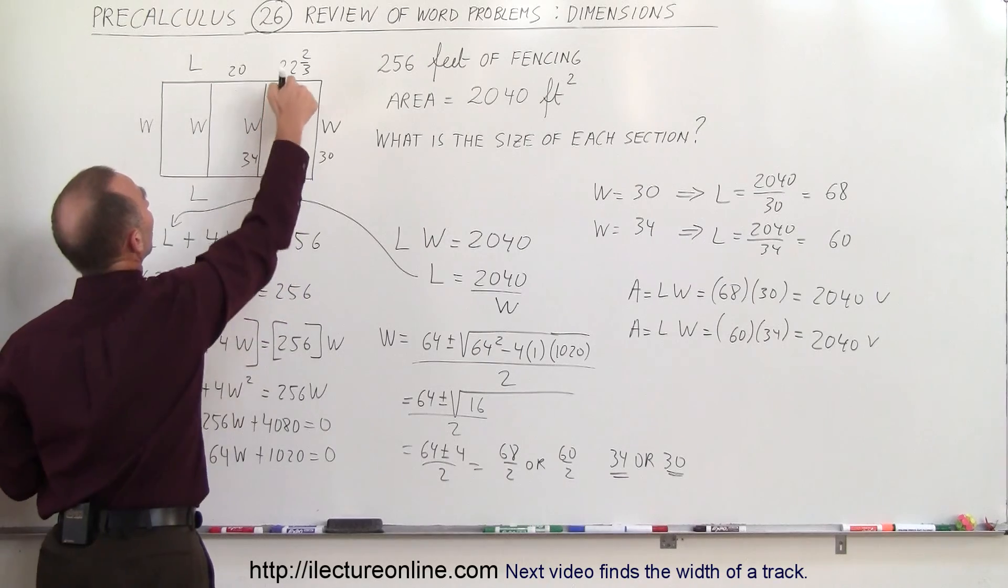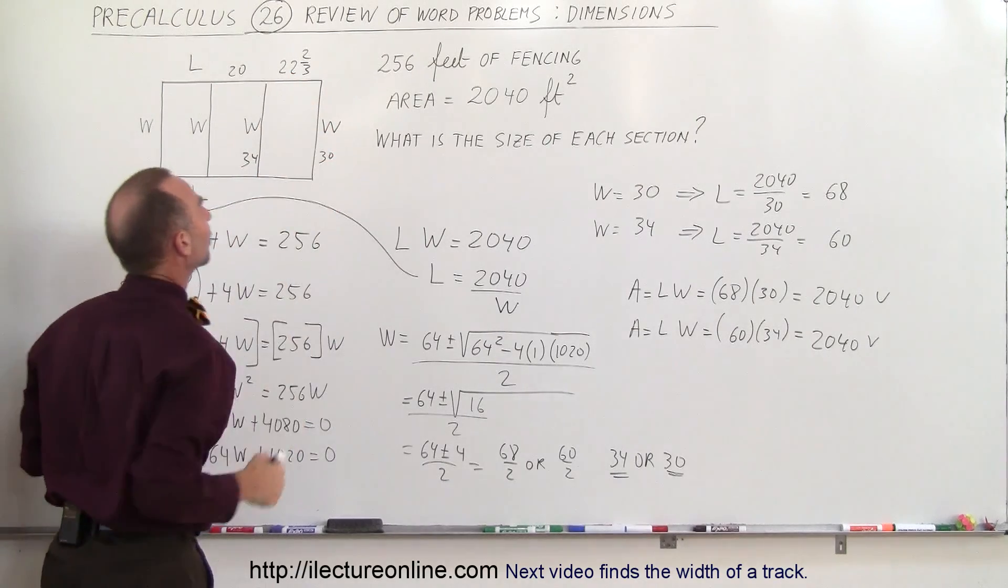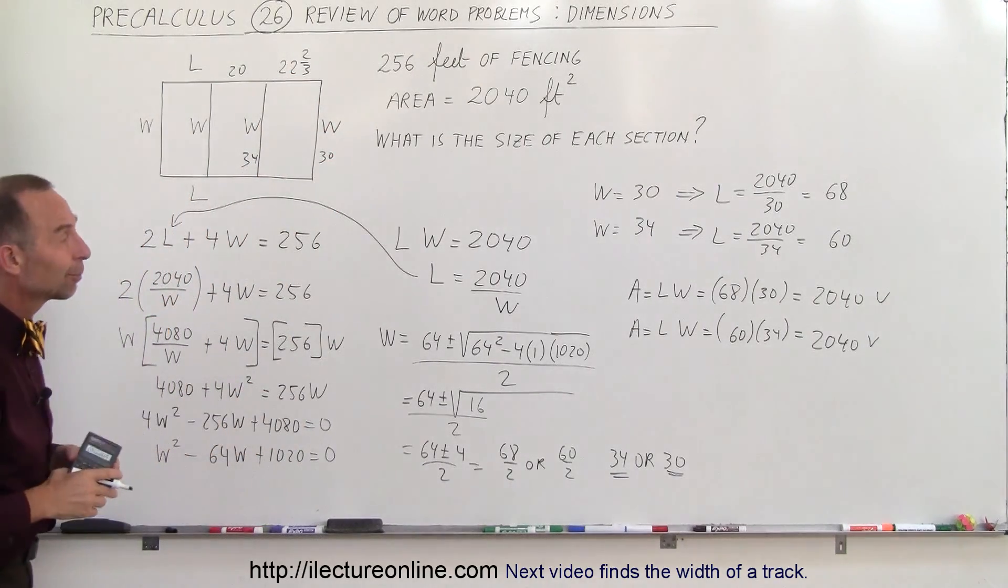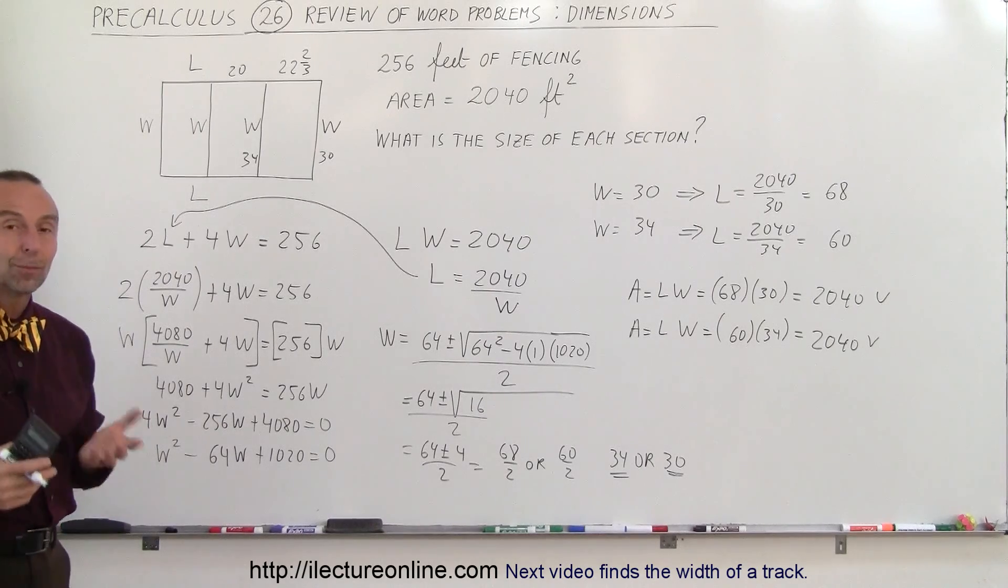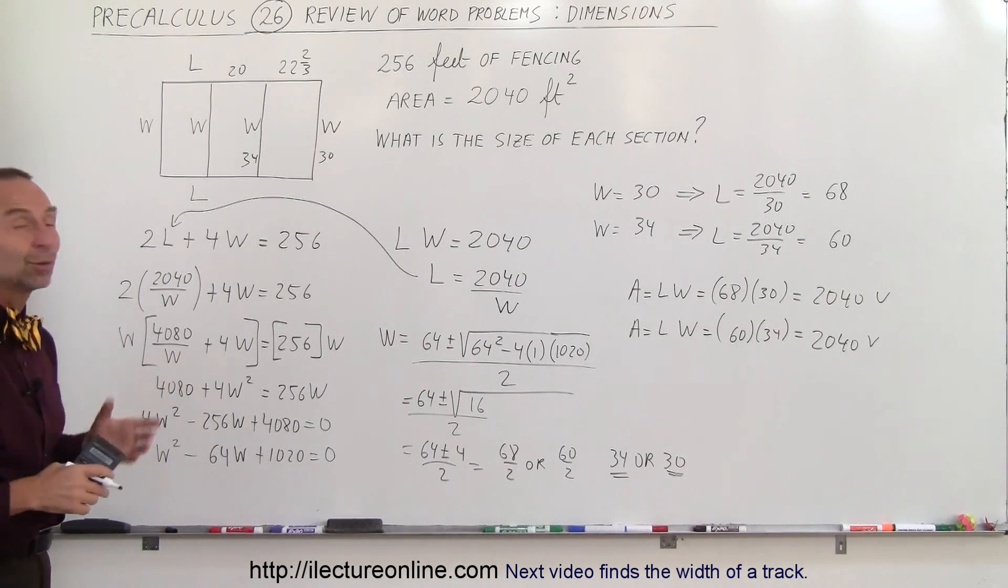So we have an option to have a 20 by 34 or a 22 and a third by 30 whichever way you like. So in this particular case there are two possible answers. That's how we do that problem.